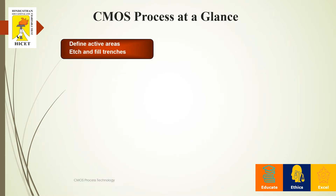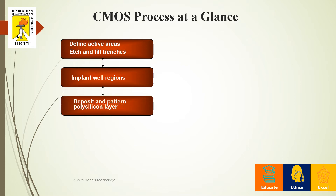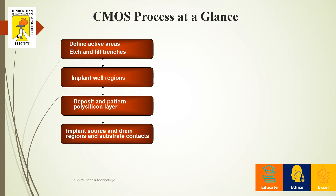We will now see the CMOS process. Initially, to create a Complementary Metal Oxide Semiconductor, you have to define the active areas, etch them, and fill the trench. Once done, we implant the well regions — if it is P-type, we put an N-well; if it is N-type, we put a P-well region. After that, we deposit a polysilicon layer, and then implant the drain and source regions along with the substrate contacts.